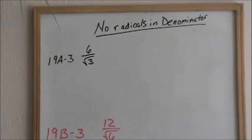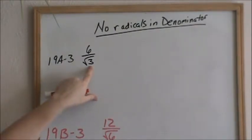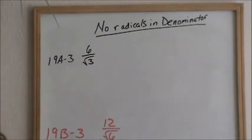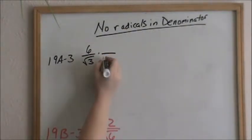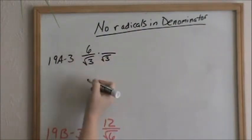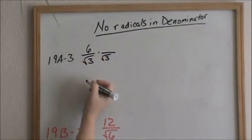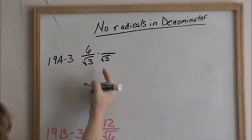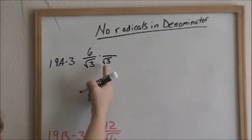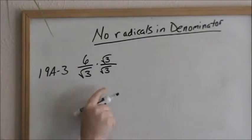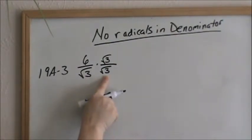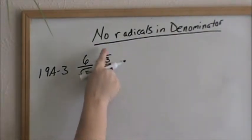The way you get rid of the radicals in the denominator is just to multiply the radical by itself. So to get rid of the square root of 3, I have to multiply it by the square root of 3. When you are dealing with fractions, whatever you do to the denominator, you have to do to the numerator, because essentially you are multiplying by 1. Square root of 3 divided by square root of 3 is 1.